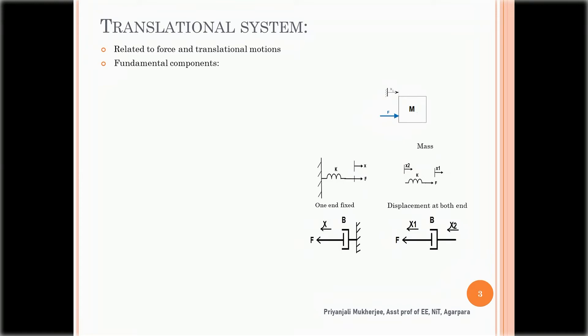Next are the fundamental components of the translational systems. The first one is mass. Mass is a mechanical element that has inertia, and when a force is applied to the mass, displacement takes place. If displacement is in the X1 direction, an opposite force F_M is generated in the opposite direction, known as the reaction force.